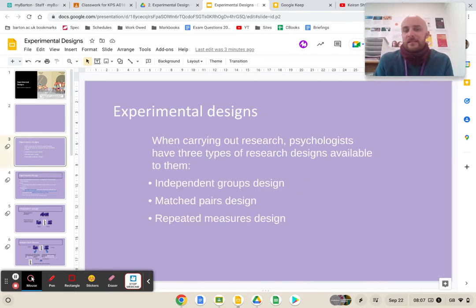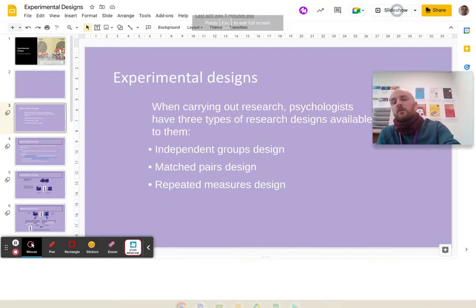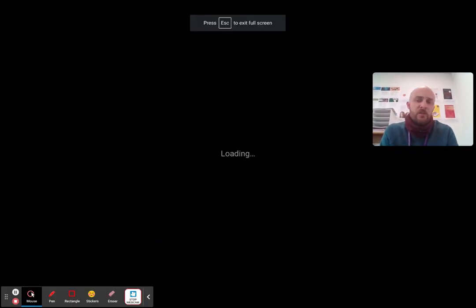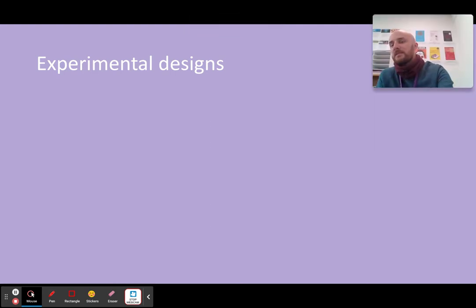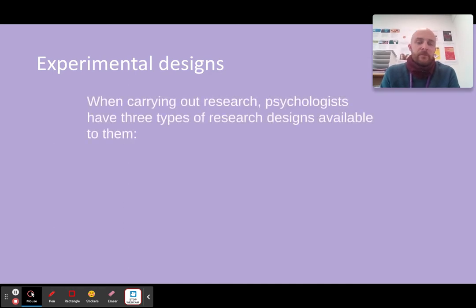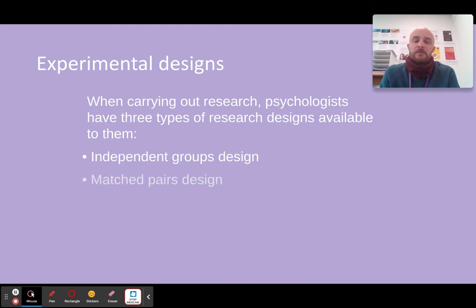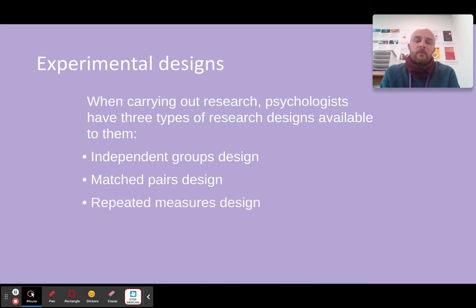What we are looking at today is experimental designs — essentially how you structure an experiment. The three types of research designs we are looking at are independent groups, matched pairs (by far the more complicated one), and repeated measures.